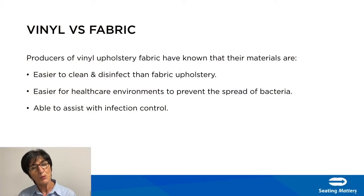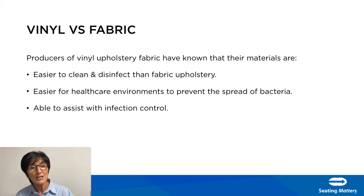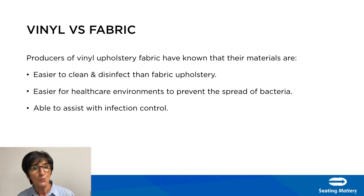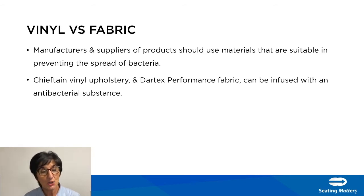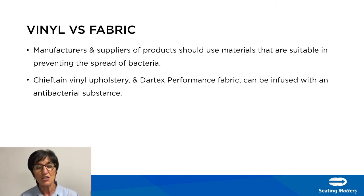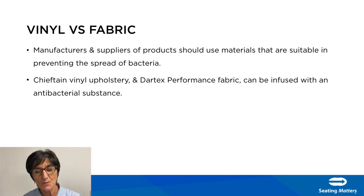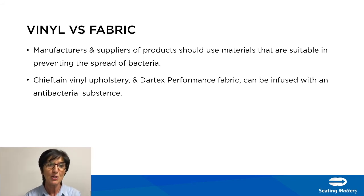Producers of vinyl upholstery fabric have known for some time that their materials are easier to clean and disinfect than fabric upholstery, and as a result this makes it easier for healthcare environments to prevent the spread of bacteria and assist with infection control. Manufacturers and suppliers of clinical therapeutic seating who supply into long-term care homes, community equipment recycling stores, and hospitals should use materials that are suitable for preventing the spread of bacteria. Materials such as Chieftain vinyl upholstery or the Dartex performance fabric can be infused with an antibacterial substance which can hinder the growth of bacteria.